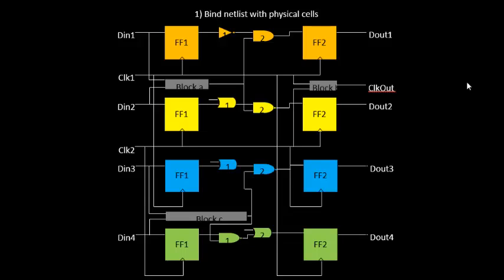Hello everyone. In the last video we stopped at a place where our floor plan was ready and we were almost entering into the physical and routing step. So the first step I will introduce you to is binding the netlist with physical cells. What this exactly means is we have to take each and every block or each and every logic gate in the design and give it a physical shape and size.